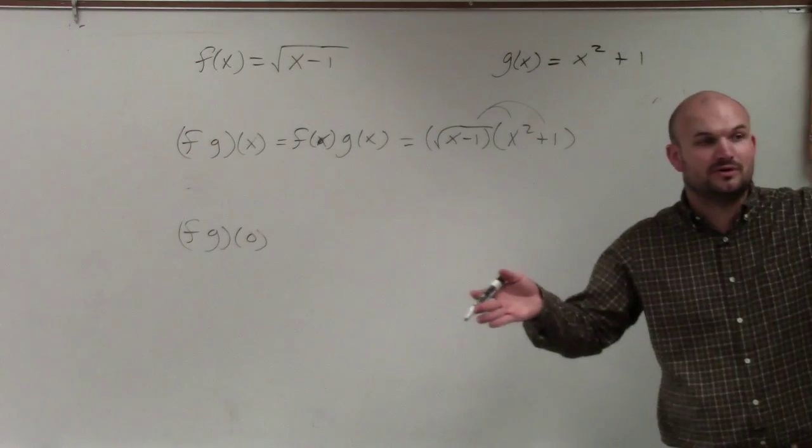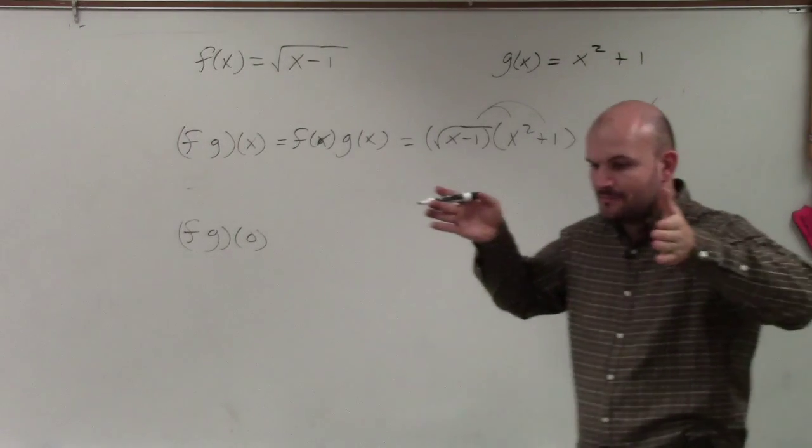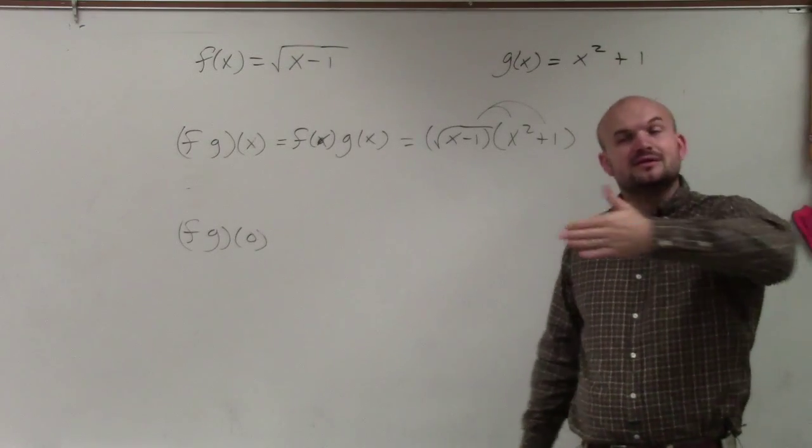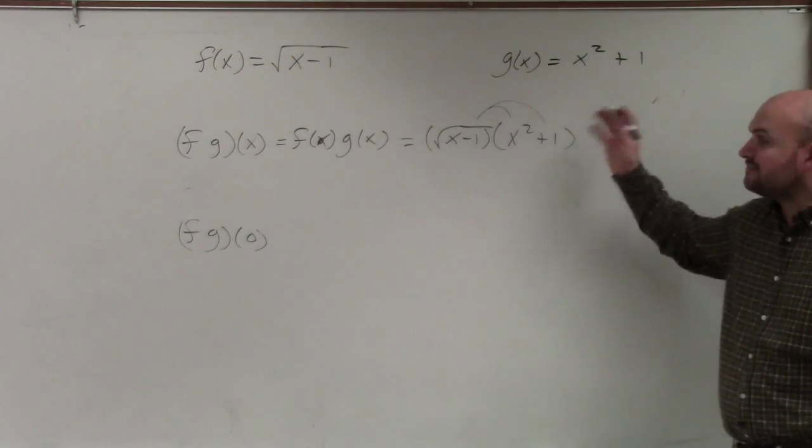But basically, remember, if you have a fraction times a whole fraction times an integer, rewriting both as fractions, multiplying numerator times numerator, denominator times denominator. In this case I can simplify.